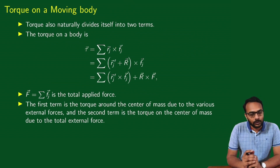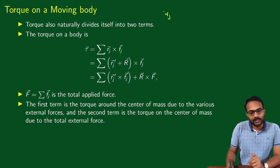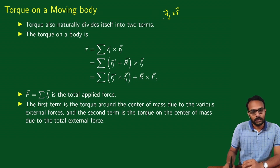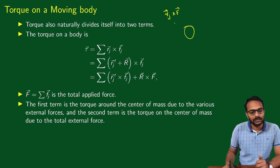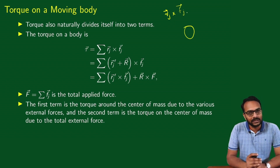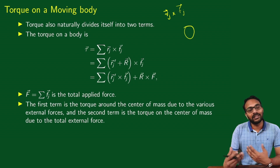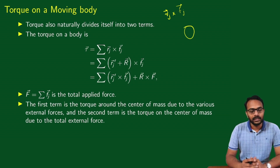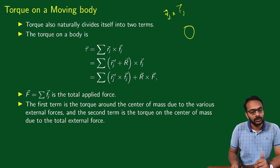Now we'll do the same thing for torque. The torque on a body is defined as r cross F. If there are n particles, the torque on the j-th particle is rj-vector cross Fj-vector. For an extended rigid body made up of a large number of particles, the forces may be different on each particle. So we write rj-vector cross Fj-vector as the torque on the j-th particle, and the total torque is the vector sum of all individual torques — the sum over j from 1 to n of rj-vector cross Fj-vector.